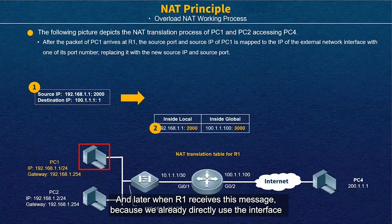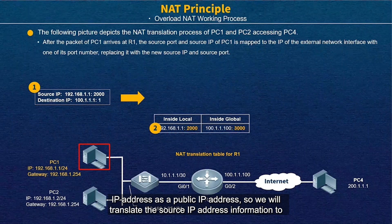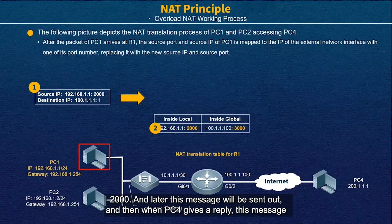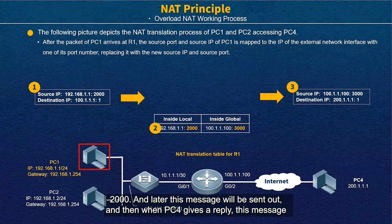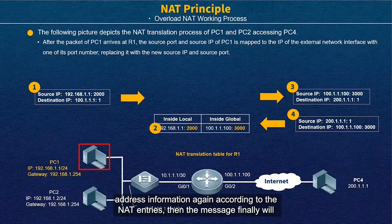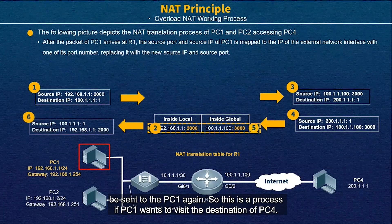When Router 1 receives the message, because we are using the interface IP address as the public IP, it translates the source IP address to 100.1.1.100 and translates PC1's port 2000 to port 3000. The message is then sent out. When PC4 replies, the message is sent back to Router 1, which translates the destination IP address again according to the NAT entries, and the message is finally sent back to PC1.